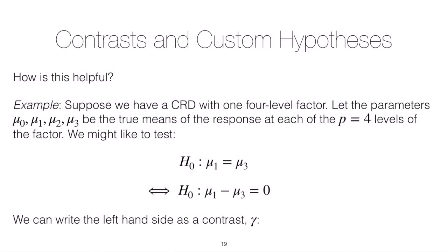Suppose we have the parameters mu0 through mu3 and those are the true means of the response at each of the four levels of the factor. One of the many things that we might like to test is the null hypothesis that mu1 is equal to mu3. We know that we often write this as mu1 minus mu3 is equal to 0, so we can write the left-hand side as a contrast.